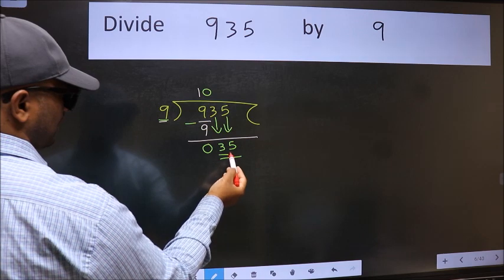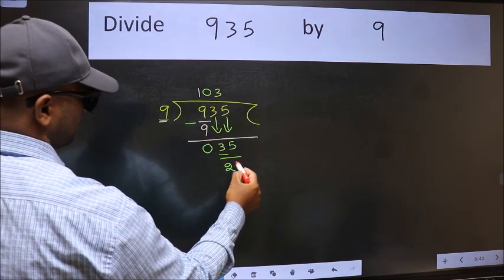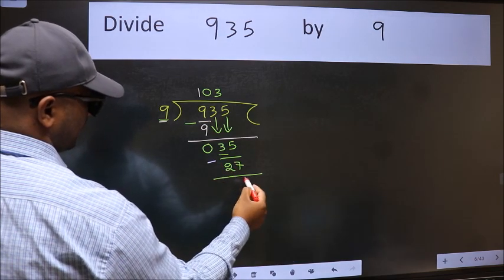Now 35. A number close to 35 in 9 table is 9 threes, 27. Now we should subtract. We get 8.